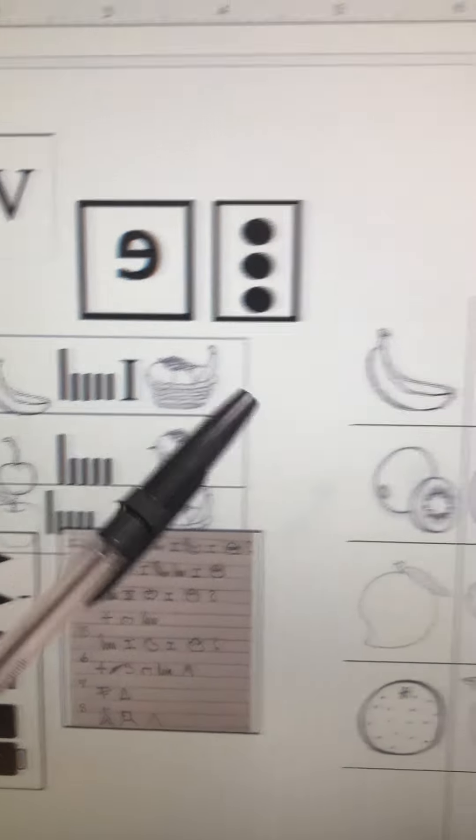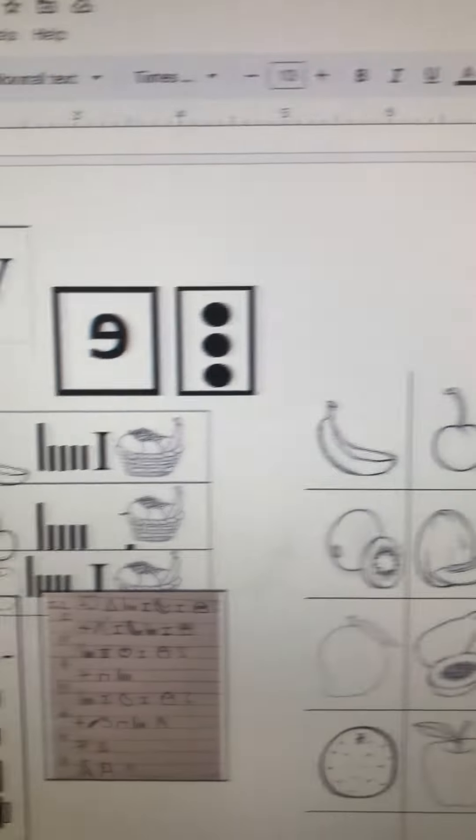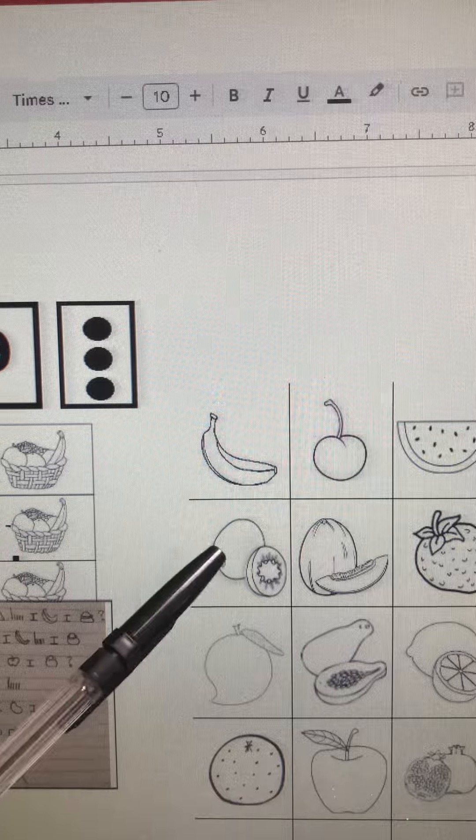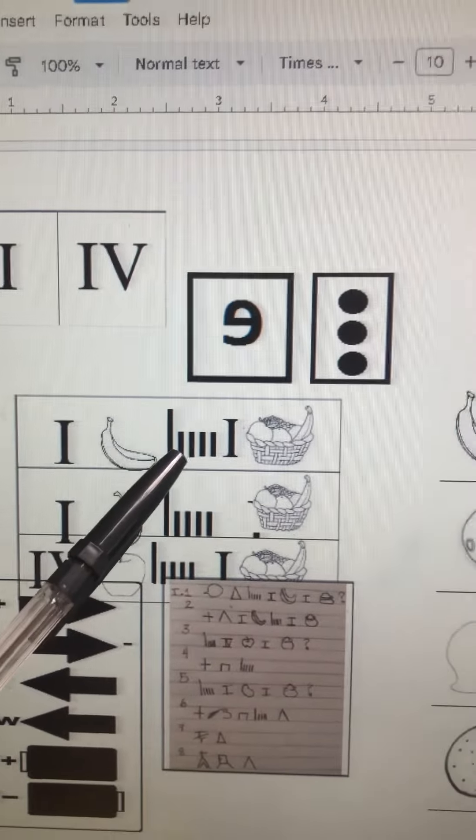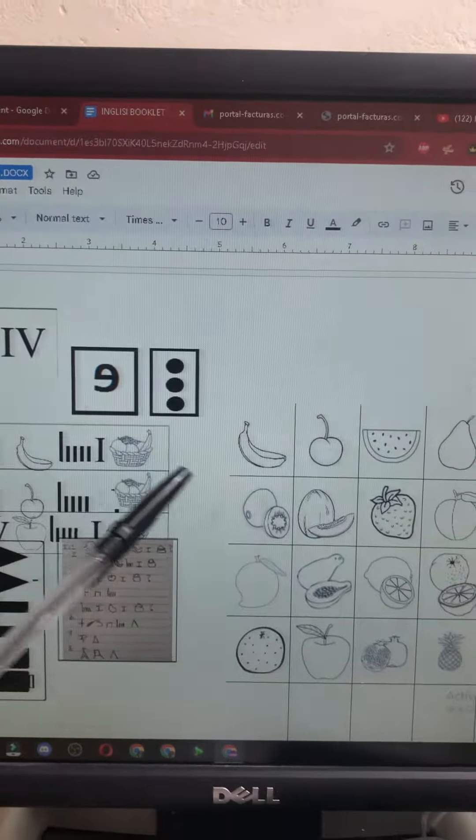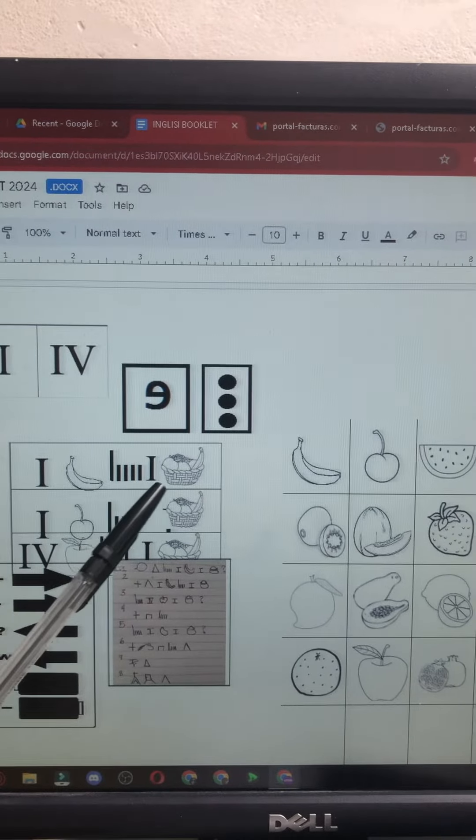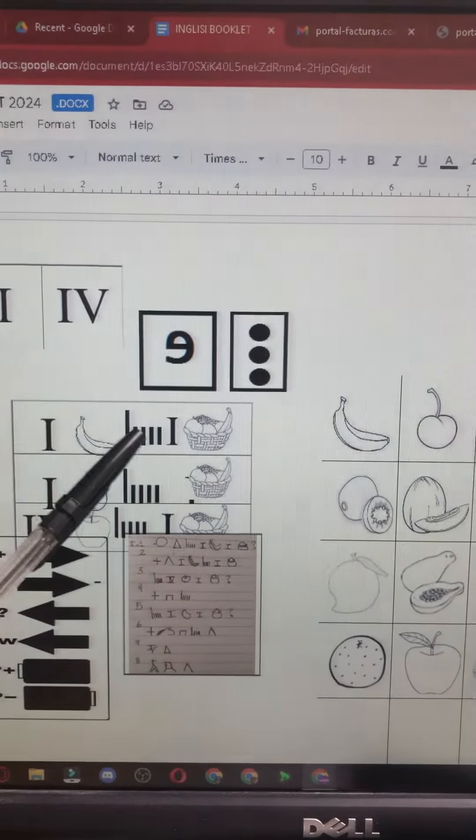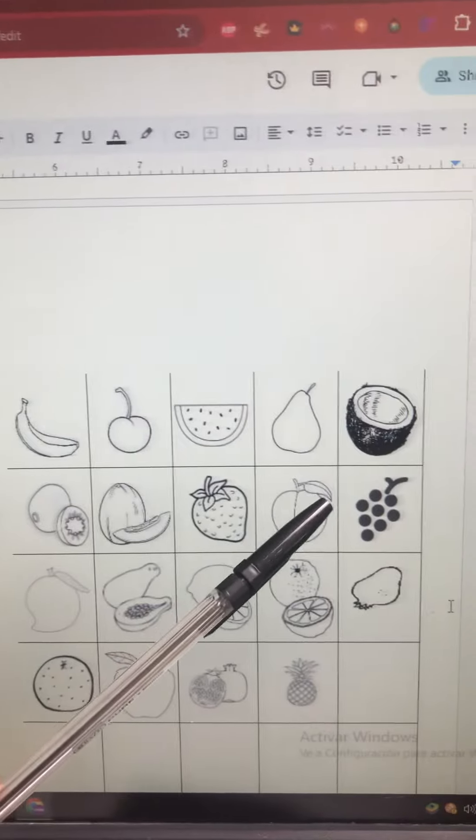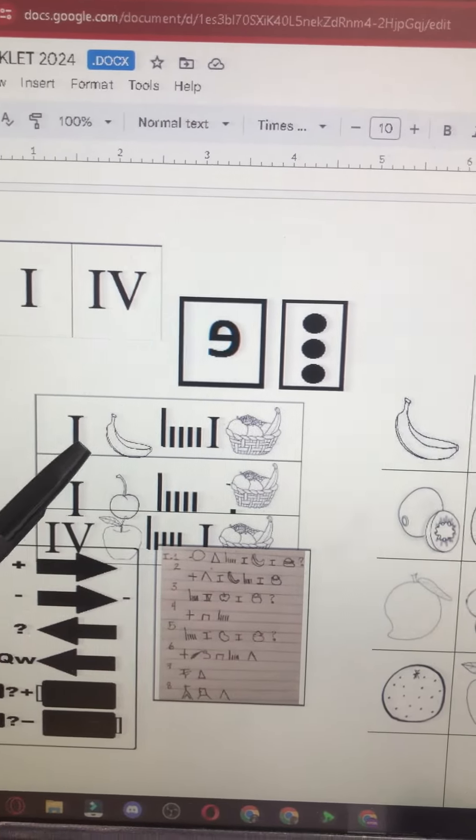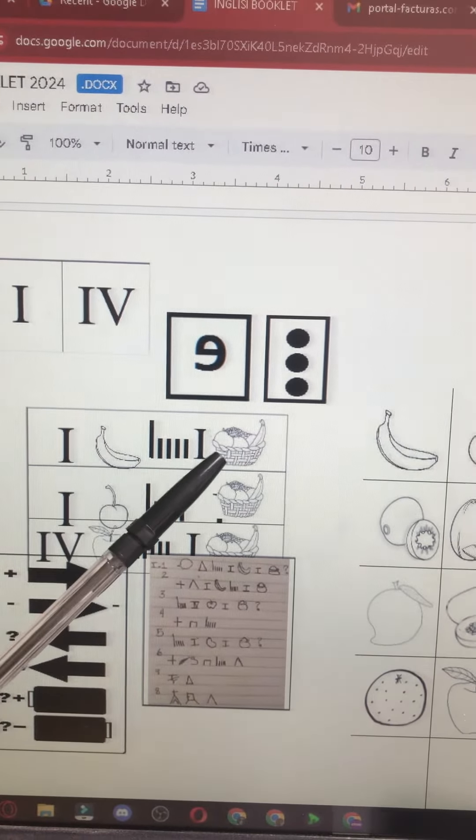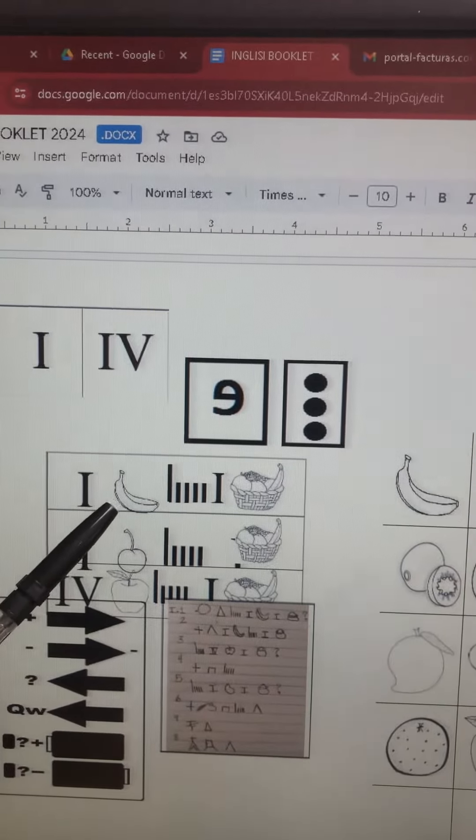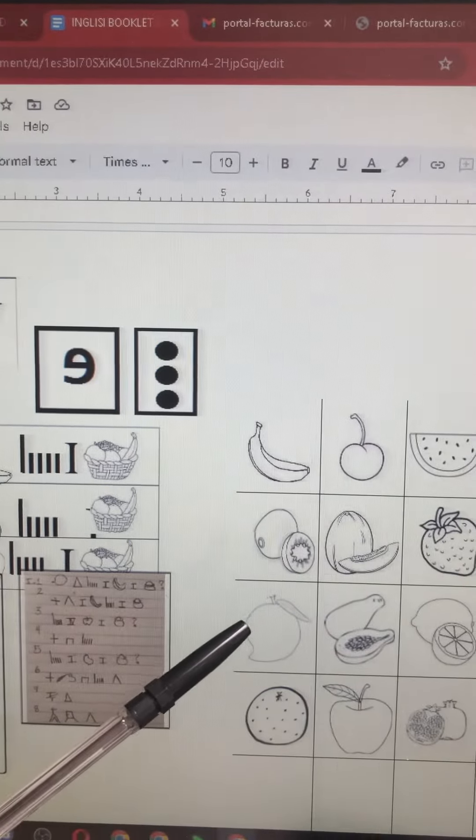Coco: un coco es una fruta. Kiwi: un kiwi es una fruta. Melón: un melón es una fruta. Fresa: una fresa es una fruta. Durazno: un durazno es una fruta.